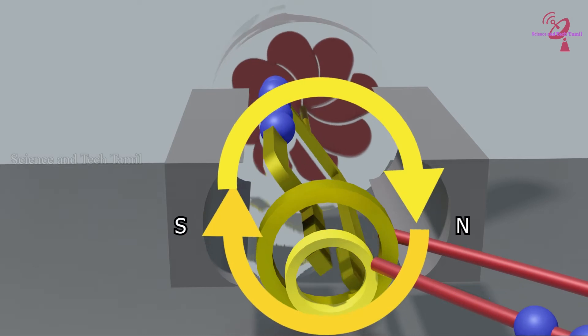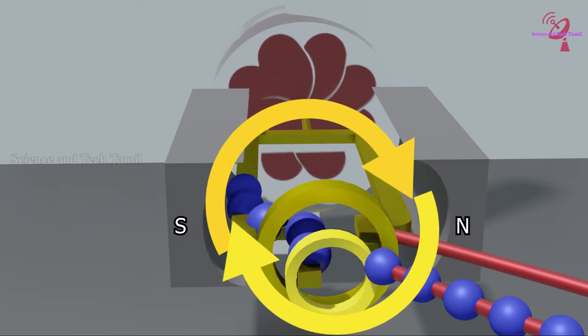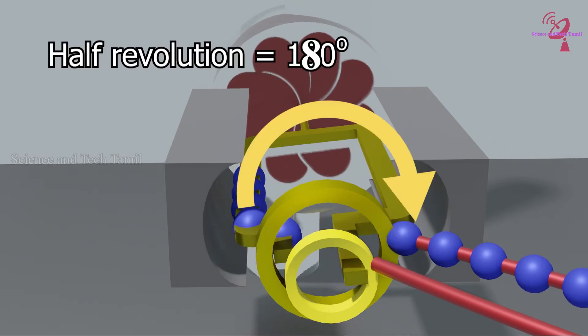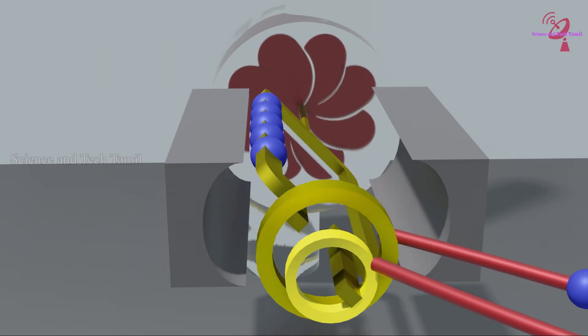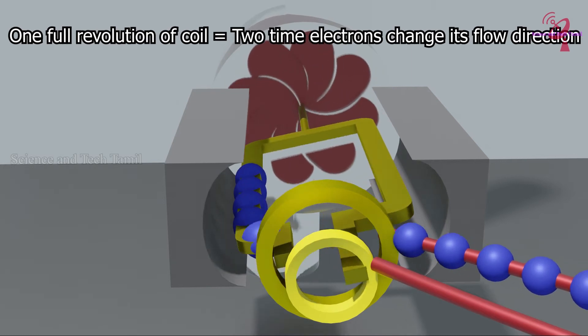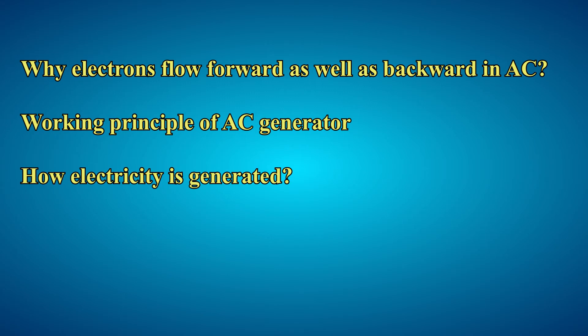After completion of a half revolution, the electrons flow in reverse while the north side moves to south and the south side moves to north. Each revolution is 180 degrees. The electrons change their flow direction two times for each revolution of the coil. I hope you have understood why electrons flow forward as well as backward in AC, and also the working principle of AC generators and generation of alternating current.